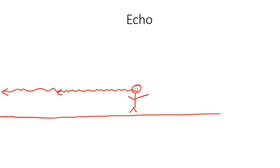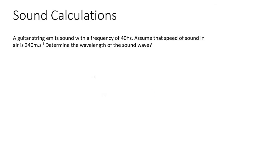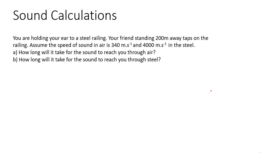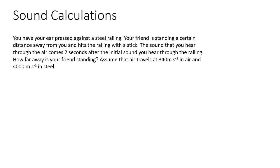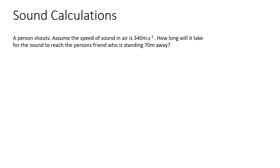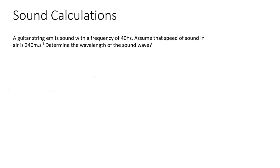So we're going to be doing a whole bunch of sound calculations now, some of them are going to have echo in them, and I'll show you what to do. Now stick around for all of them, because they're going to get quite complicated, especially the last question. So they tell us that a guitar string emits sound with a frequency of 40 hertz.